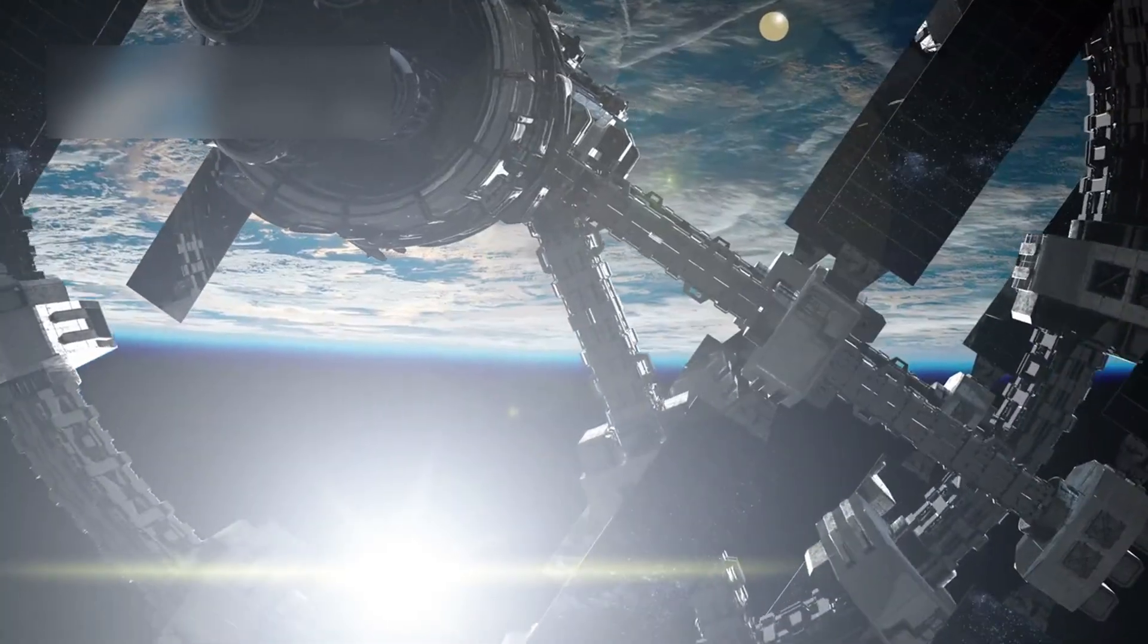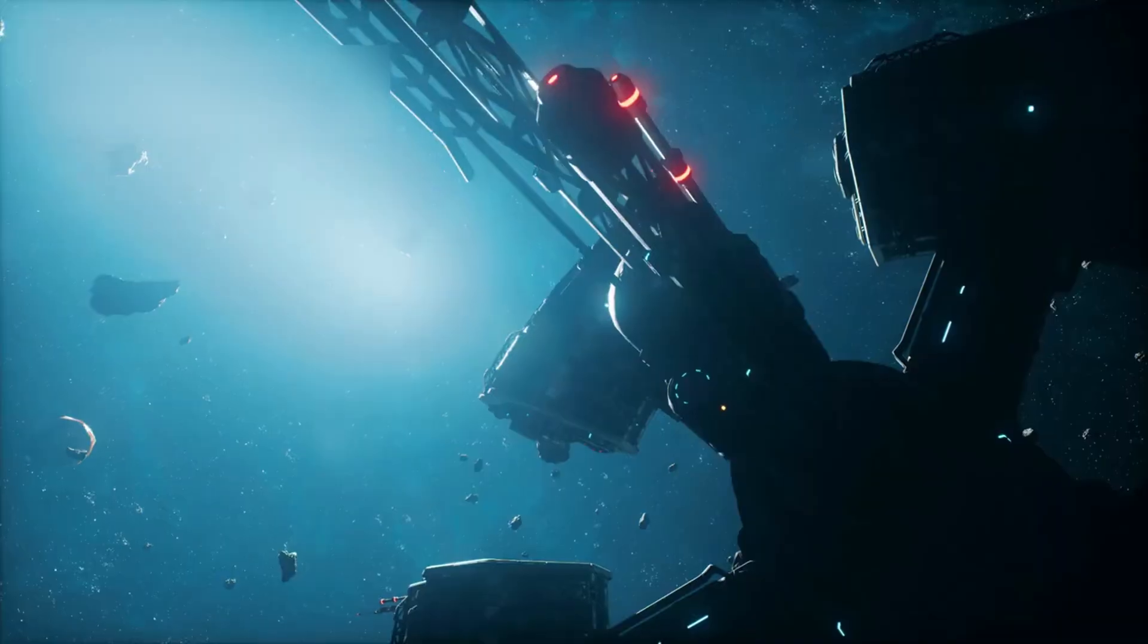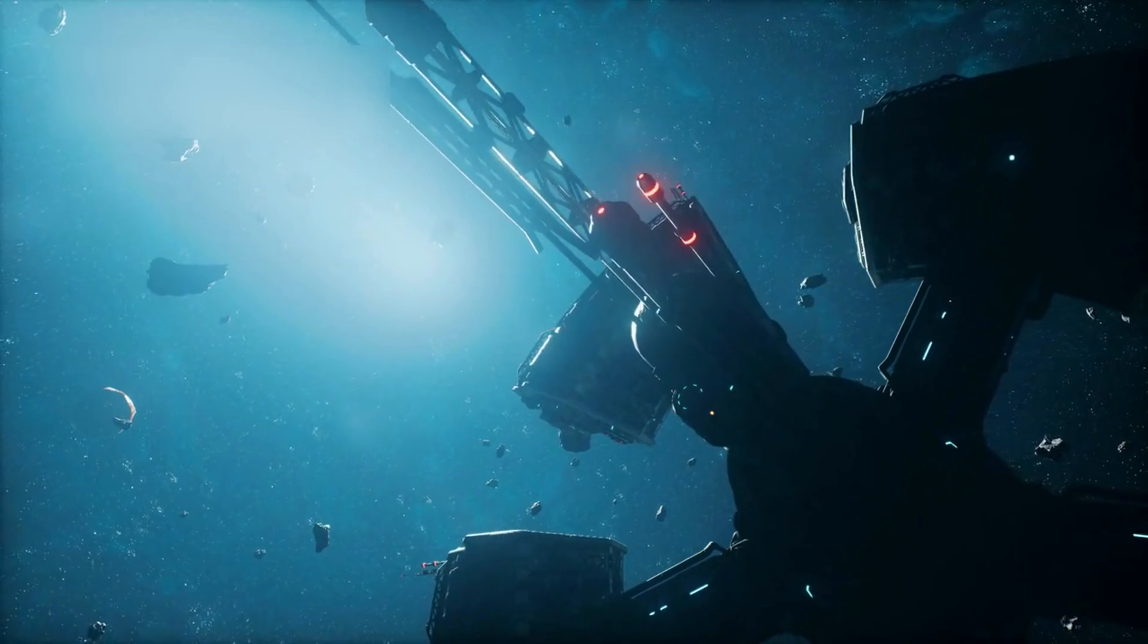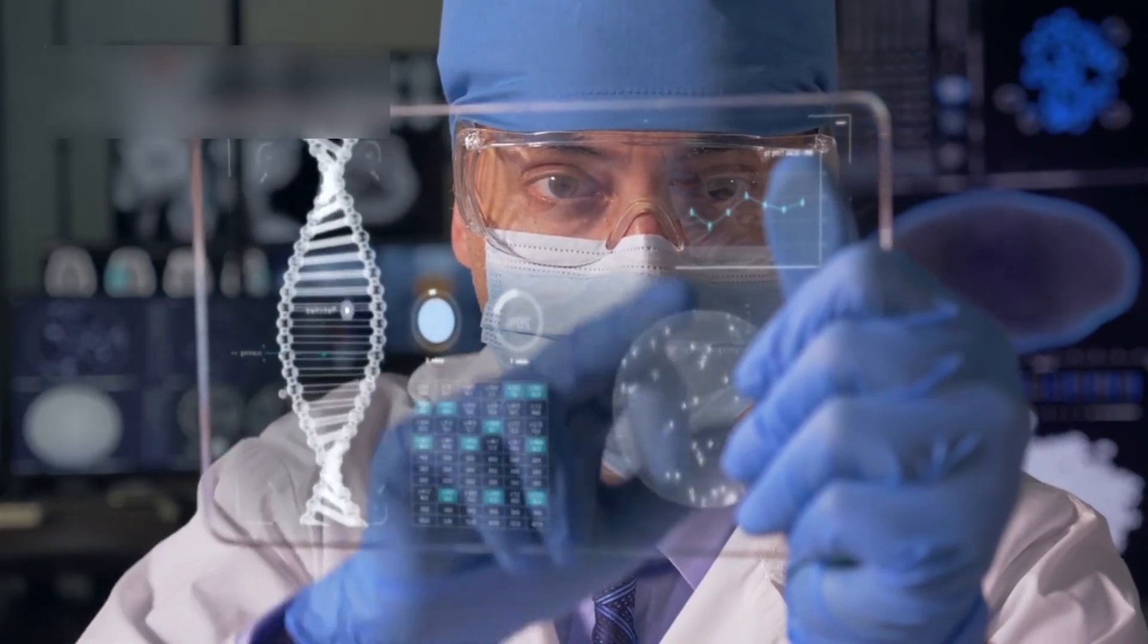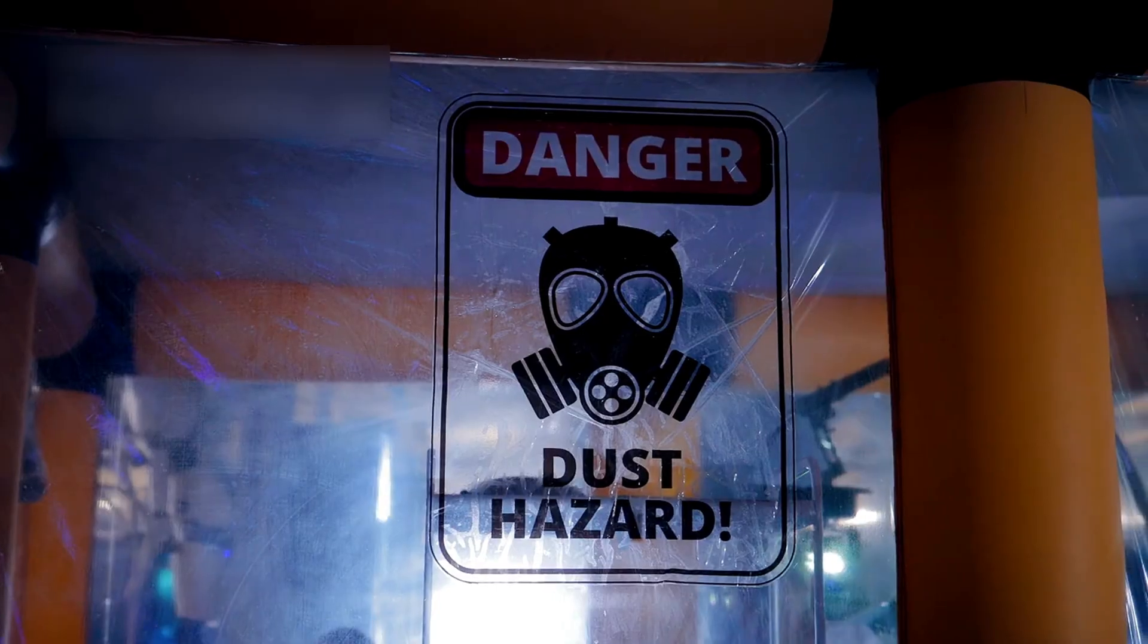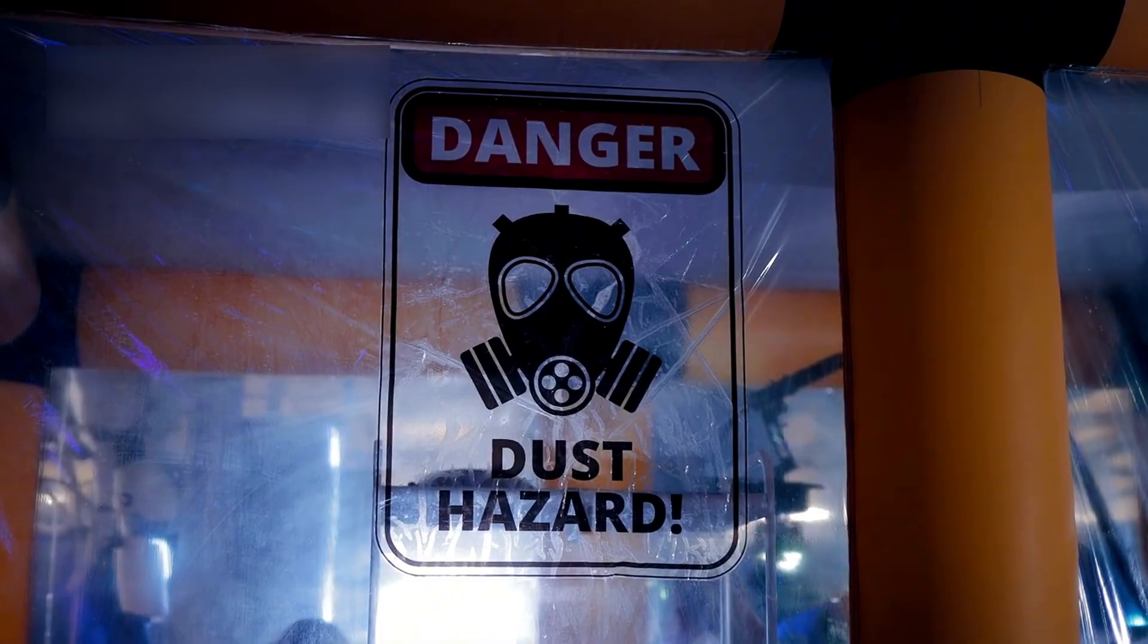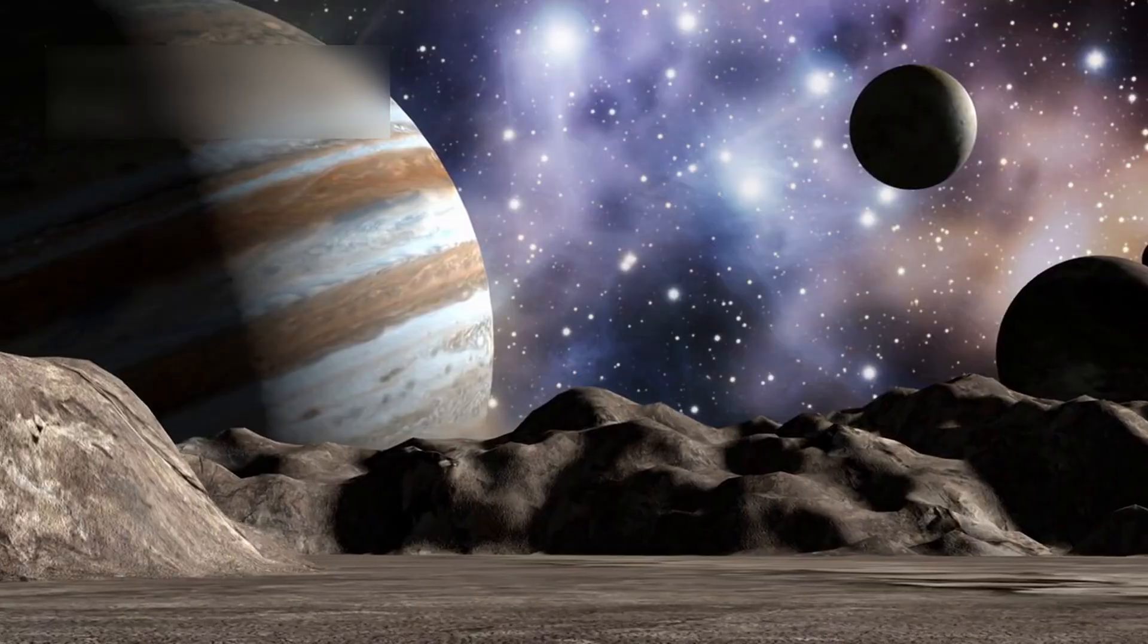Data from Voyager 1 recently confused scientists. Its readings didn't match the control systems we understand. That error triggered new questions about exploration methods. Still, their instruments work with stunning precision despite limits.